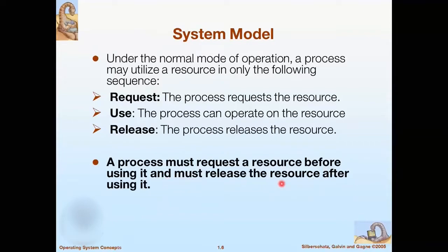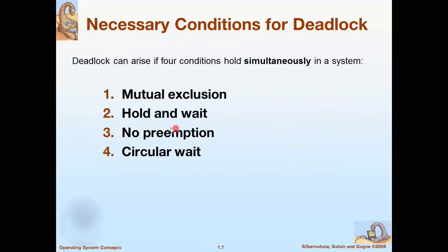A process may request as many resources as it requires. But the number of resources requested by a particular process may not exceed the total number of resources available in the system. For example, a process cannot request three printers if the system has only two.